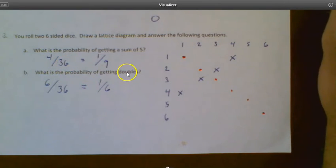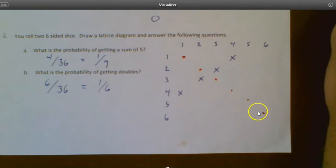And then getting doubles, and I did this one in the notes. So doubles would be the one-one, the two-two, the three-three. So these red dots, there are six of them, represent the cases where you're getting doubles. So six out of the 36 would be your doubles.